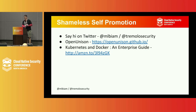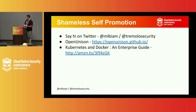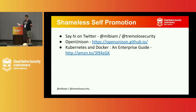And finally, some shameless self-promotion. Say hi on Twitter. If you're looking for an identity provider, we make Open Unison, an open-source identity provider that plugs right into Kubernetes. And then our book, Kubernetes and Docker: An Enterprise Guide. That's it — thanks.